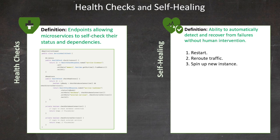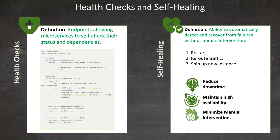The benefits of this approach are significant: we can reduce downtime, maintain high availability, and minimize the need for manual intervention. In a microservices architecture, failures are inevitable. The key is to detect these failures quickly and respond automatically, allowing our system to self-heal and maintain overall functionality even when individual components fail. By implementing robust health checks and self-healing mechanisms, we create a more resilient, fault-tolerant system that can withstand the challenges of a distributed architecture.